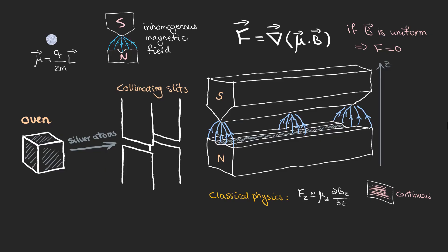This means the z-component of the magnetic moment could take on a continuous range of values and as a result the atoms would experience a continuous range of forces in the non-uniform magnetic field that caused them to be deflected by varying amounts.